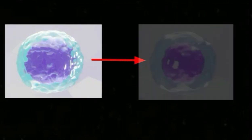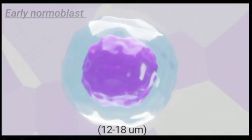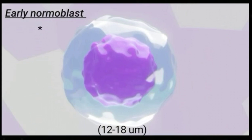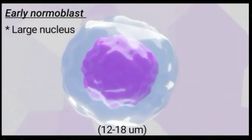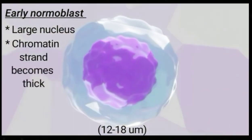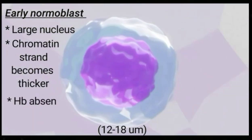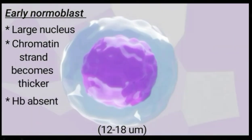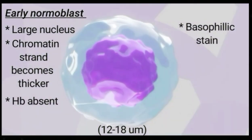Then proerythroblast differentiates into early normoblast. The early normoblast has a large nucleus, chromatin strands become thicker, hemoglobin is absent, and it stains basophilic.